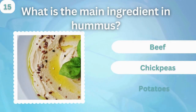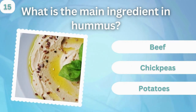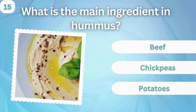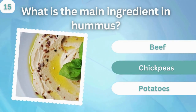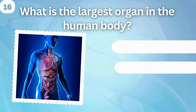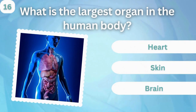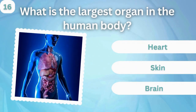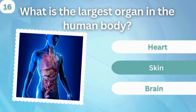What is the main ingredient in hummus? Beef, chickpeas, or potatoes? Chickpeas. What is the largest organ in the human body? Heart, skin, or brain? Skin.